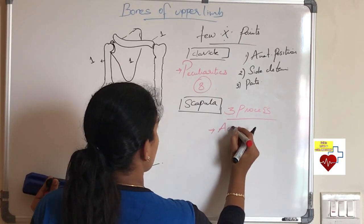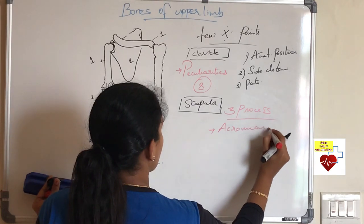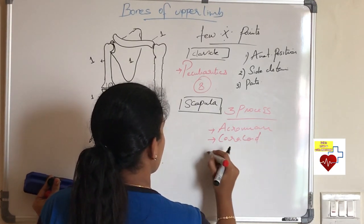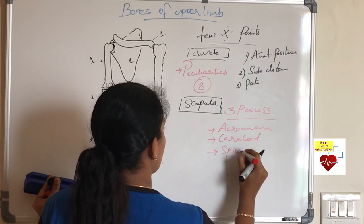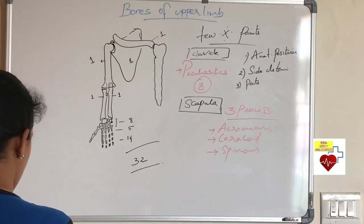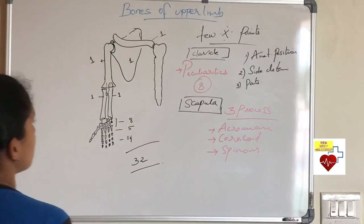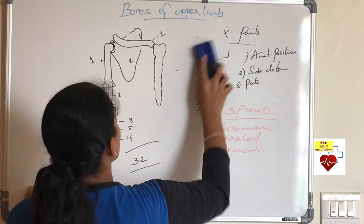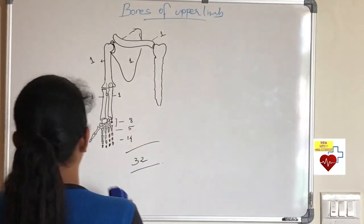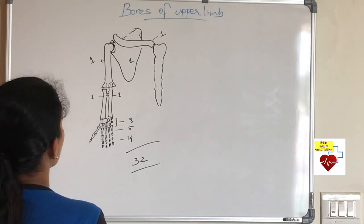Next comes scapula. Just for now you should know there are three processes: acromion process, coracoid process and spinous process. Yes definitely apart from this you should know again anatomical position, side determination, muscle attachments. We are just seeing only the points to understand the muscle attachment later.